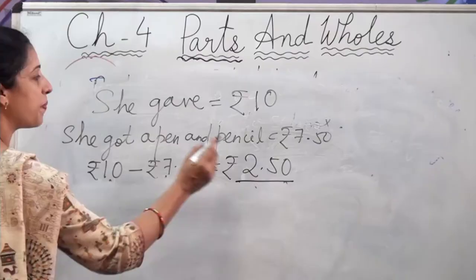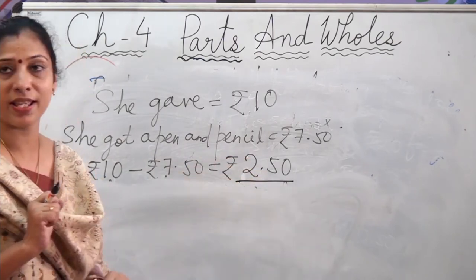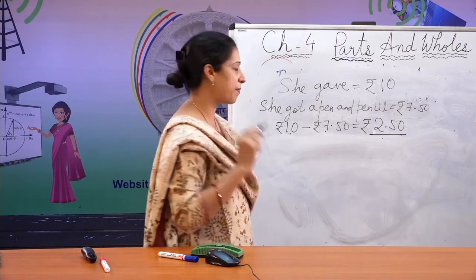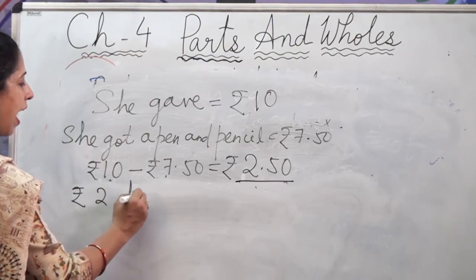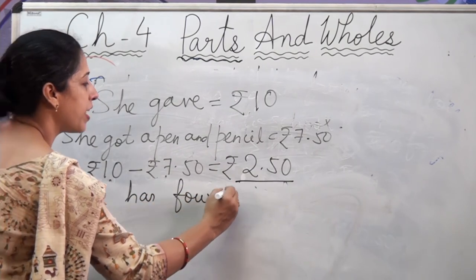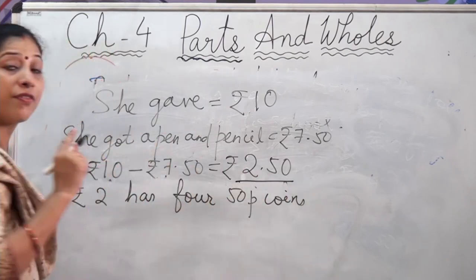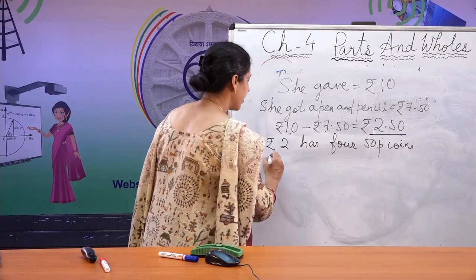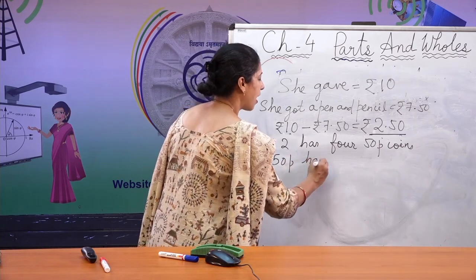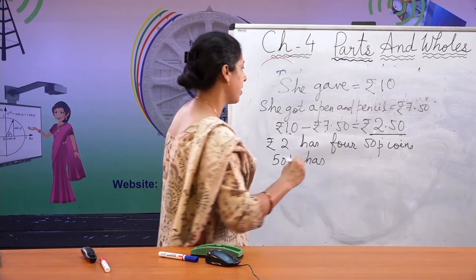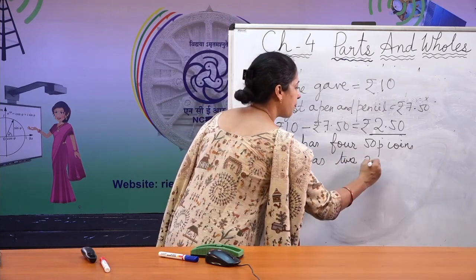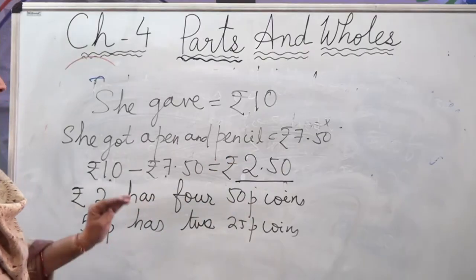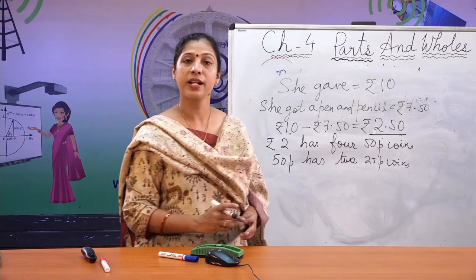If he gave 2 rupees in 50 paise coins and 50 paise in 25 paise coins: rupees 2 has 4 fifty-paise coins (since 1 rupee has 2 fifty-paise coins, 2 rupees will have 4). And 50 paise has 2 twenty-five-paise coins. So in total, Latha will get 4 fifty-paise coins and 2 twenty-five-paise coins in change.